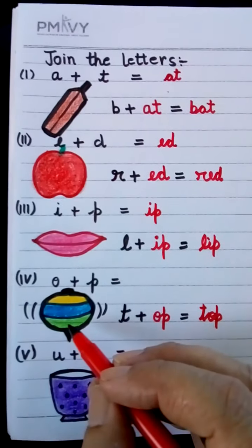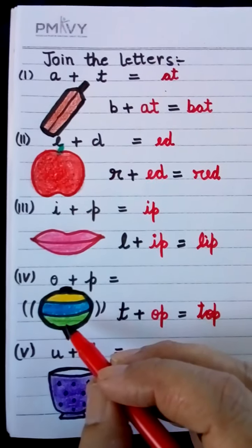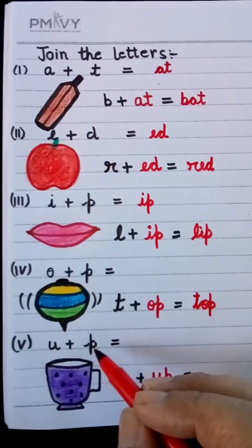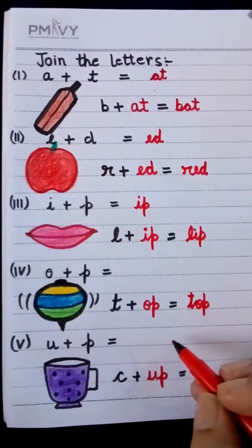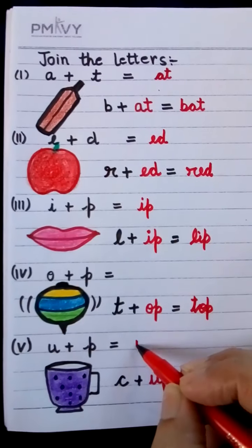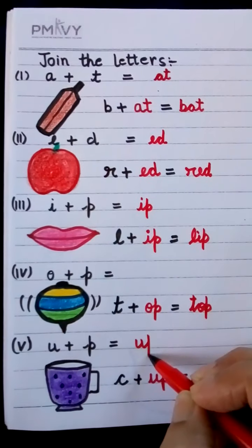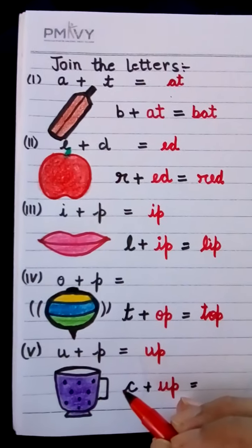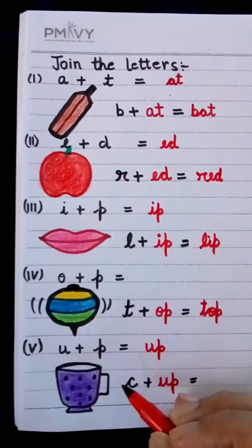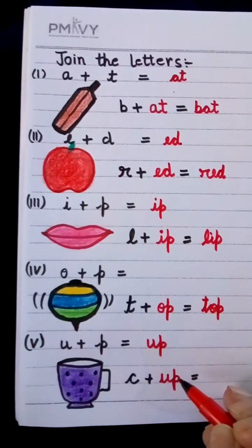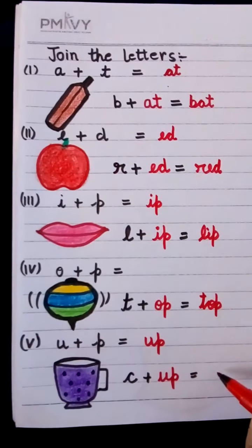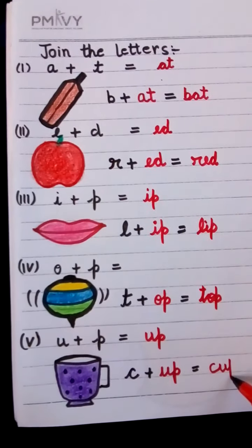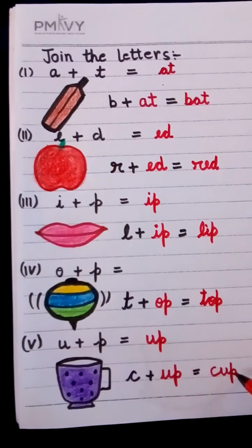T-O-P. This is the picture of T. U-P. Up. U-P. Up. We will join C also. C-U-P. Cup.